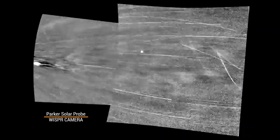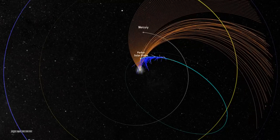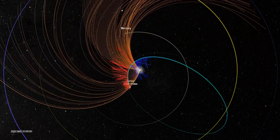As Parker entered the corona, its whisper instrument took these images. Streams of plasma surrounded the spacecraft, and Parker's other instruments detected that the magnetic conditions had changed.